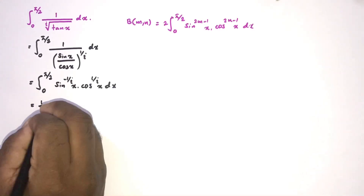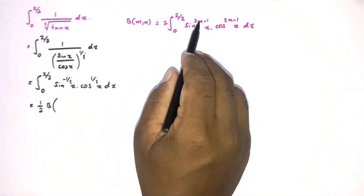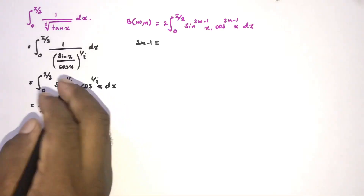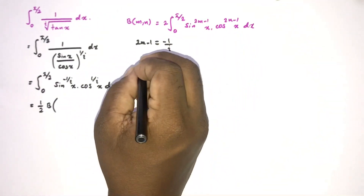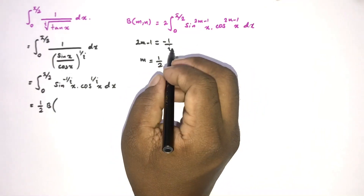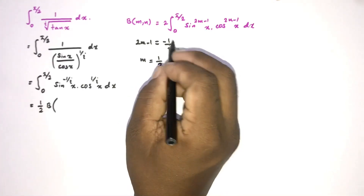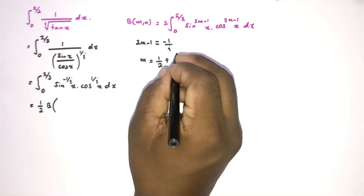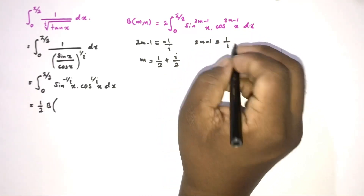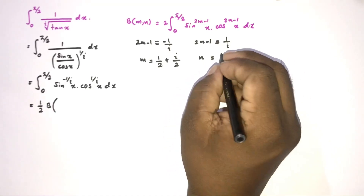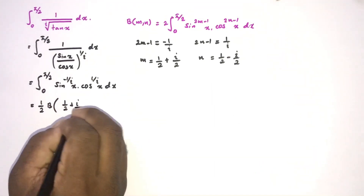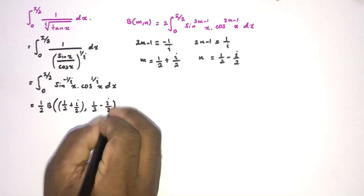So we have 1 half times beta of m, n. Now we need to find m and n. We know 2m minus 1 is equal to minus 1 over i, so m equals 1 half plus i over 2. Similarly, 2n minus 1 equals 1 over i, so n equals 1 half minus i over 2. Therefore, we have 1 half times beta of (1 half plus i over 2, 1 half minus i over 2).